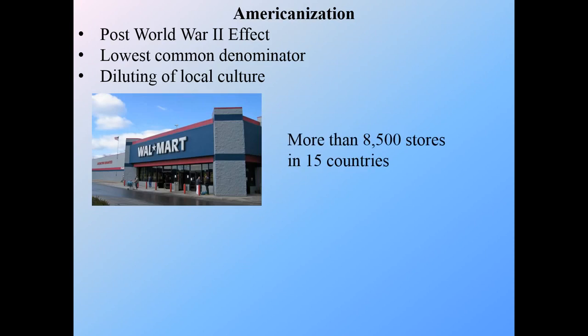A good example of that is Walmart, which has over 8,500 stores in 15 countries. The idea is that Walmart provides all of these goods quite cheaply because they're mass produced on such a scale that they can be sold cheaply. People argue this is a diluting of culture — that what people do and buy at Walmart is less valuable than going to a Crate and Barrel or a more refined experience. You might compare a local tailor versus clothes bought at Walmart. Walmart is seen as pop culture, mass produced, and unwanted.